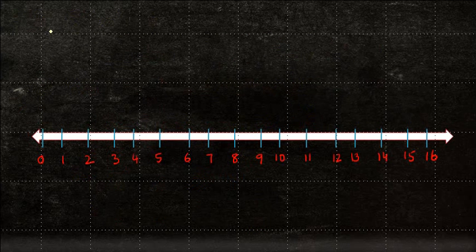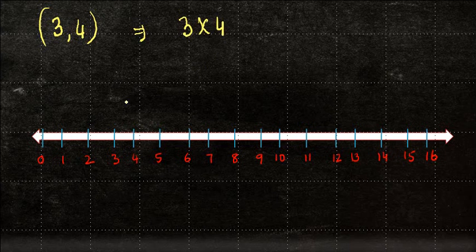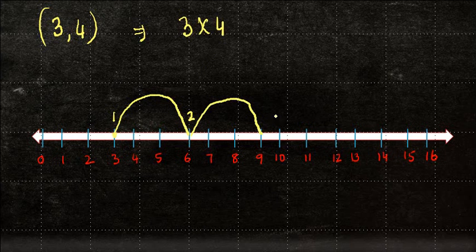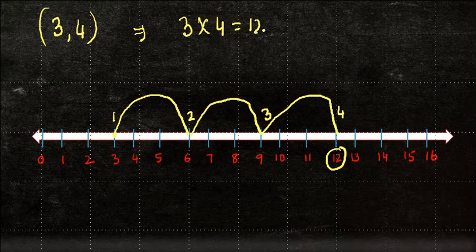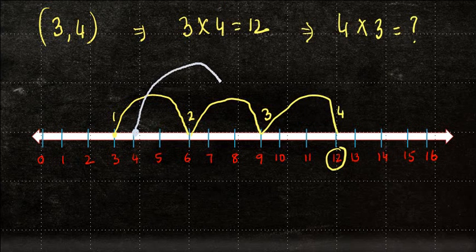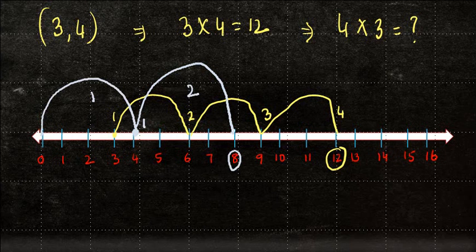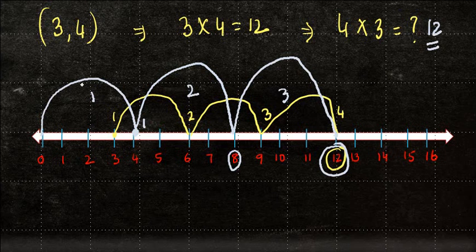Let's look at this on the number line using three and four. For three times four, I move three places at a time, four times: three times one is three, three times two is six, three times three is nine, three times four gives the answer 12. Now for four times three, I move four places at a time, three times: four times one is four, four times two is eight, four times three is 12. So even on the number line, we can see that the whole numbers are commutative for multiplication.